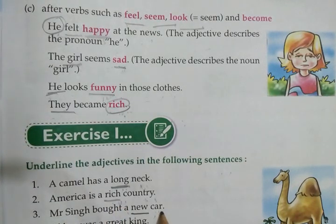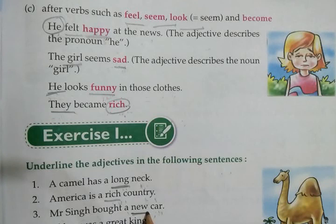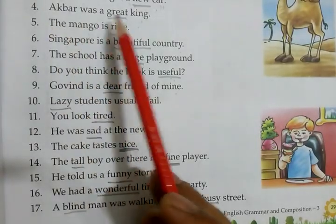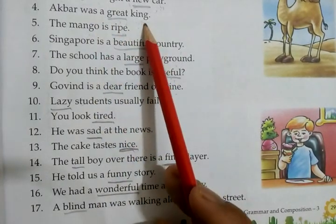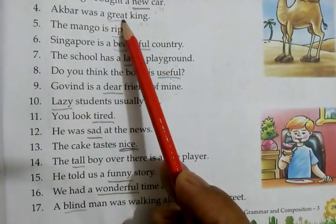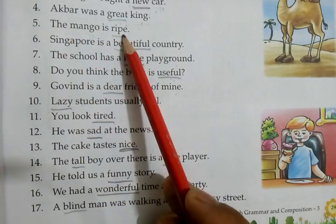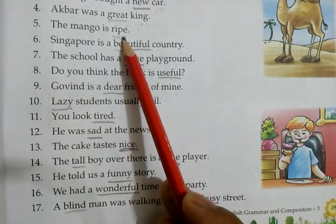Third: 'Mr. Singh bought a new car.' Mr. Singh ne ek nai car khari — kaisi car? New. New is adjective. Fourth: 'Akbar was a great king.' Akbar raja hai — kaisa raja? Great. Great is adjective. Fifth: 'The mango is ripe.' Mango kaisa hai? Paka hua. Ripe is adjective.